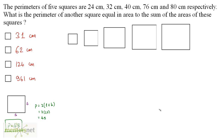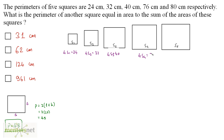Now let us solve this question. There are 5 squares. Let the sides be s1, s2, s3, s4, and s5. We have been given the perimeters of each of these squares. The perimeter of the first square is 24 cm, so 4s1 = 24. Then 4s2 = 32, 4s3 = 40, 4s4 = 76, and 4s5 = 80. Now I can calculate the values of the sides of each square.